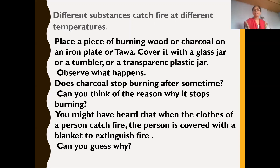Let's learn this by doing an activity. Place a piece of burning wood or charcoal on an iron plate or tawa, then cover it with a glass jar or tumbler. Observe what happens — the charcoal will stop burning after some time. The reason is that air is essential for combustion, and when the jar cuts off the air supply, burning stops.